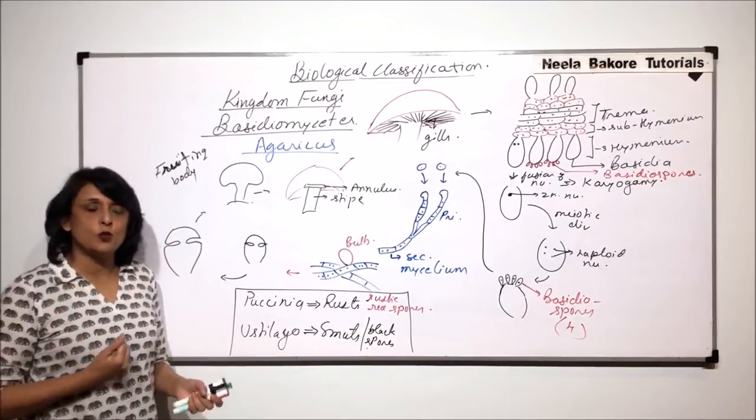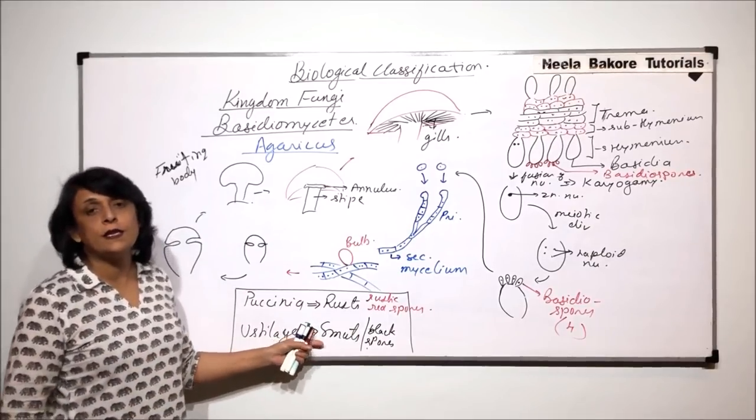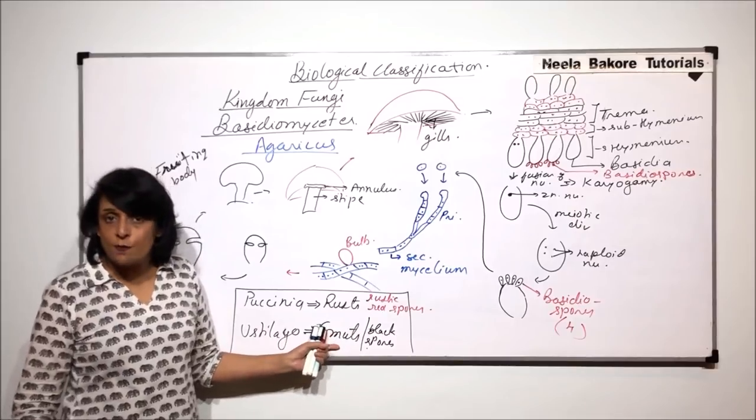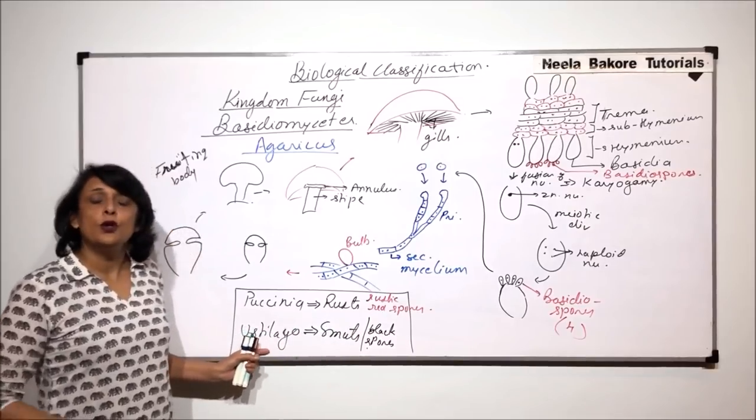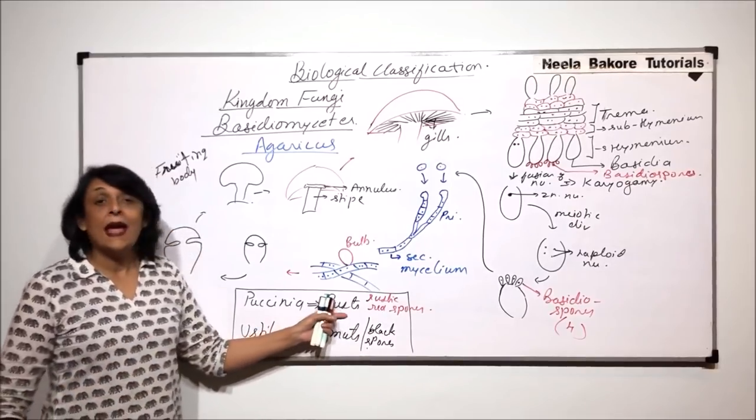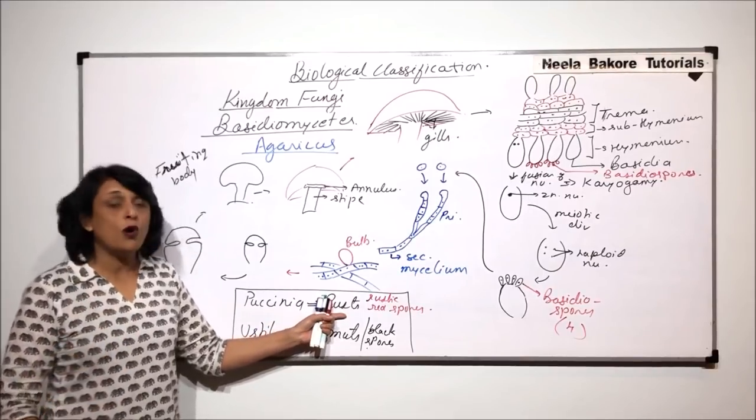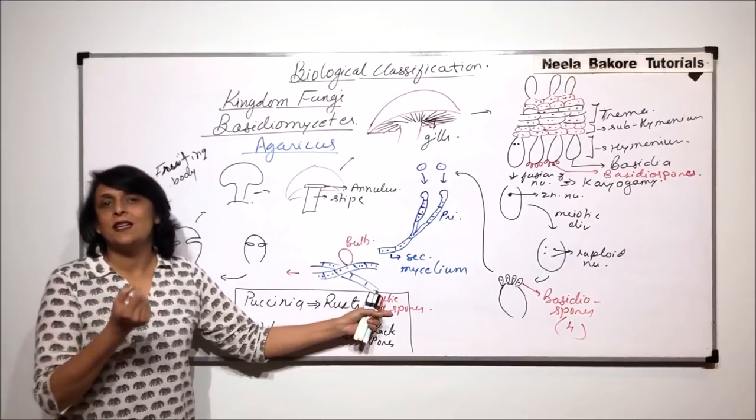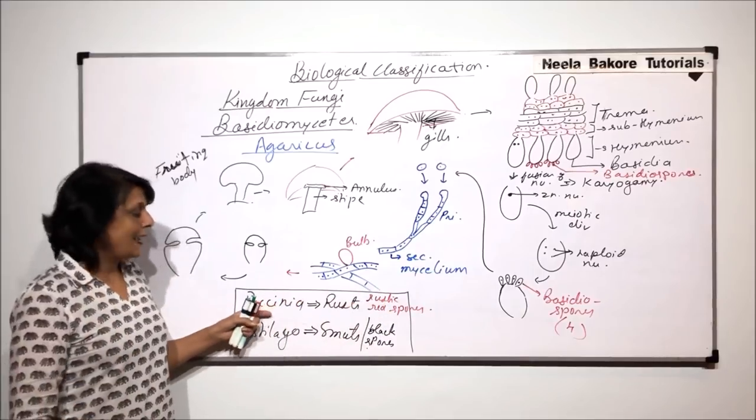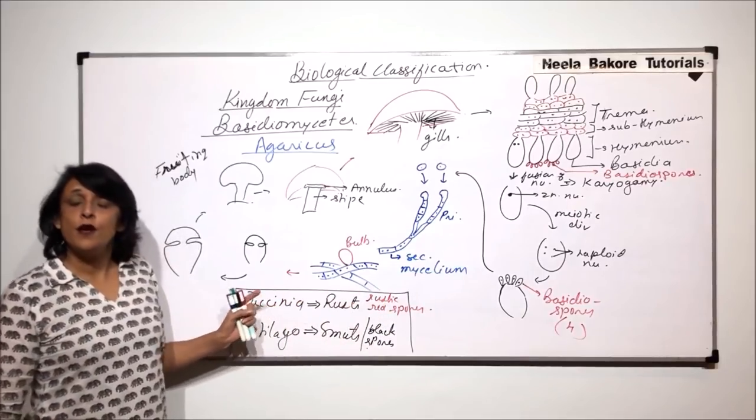There is a black powdery substance which is seen whenever there is a disease or infection which is called smut caused due to Eustilago species. And whenever there is rust infection caused, the spores appear reddish brown in color and that infection is because of Pucenia.